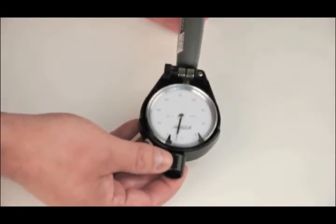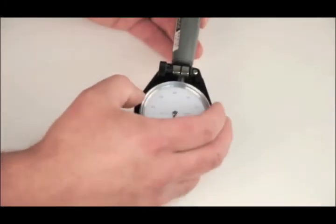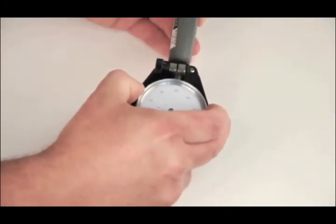Once the reversal point is determined, hold the bore gauge steady, loosen the indicator bezel lock screw, turn the dial so the hand points to zero, and tighten the bezel lock.